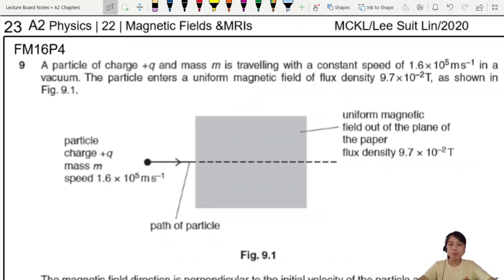This is FM16P4Q9, also a particle in a field, two fields: magnetic field and electric field. A particle of charge +q is traveling at a constant speed in a vacuum. The particle enters a uniform magnetic field of flux density B, 9.7 times 10^-2, as shown.